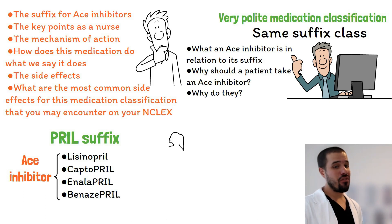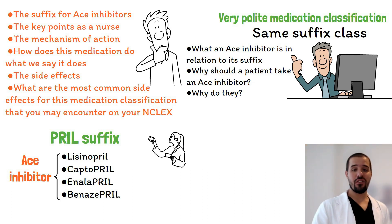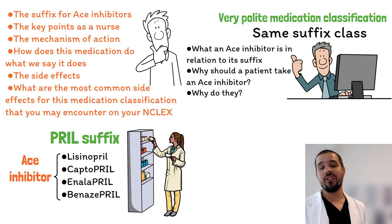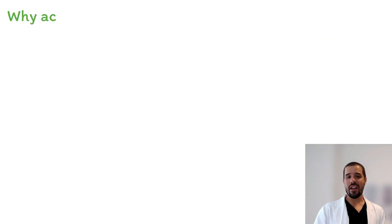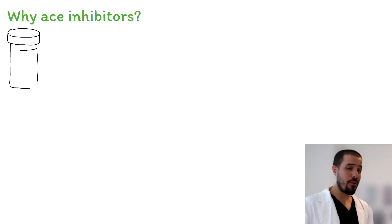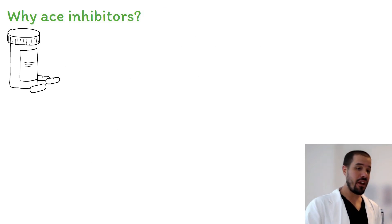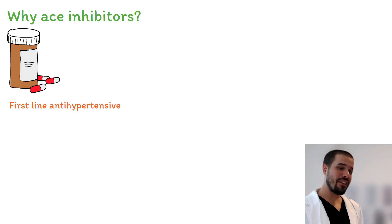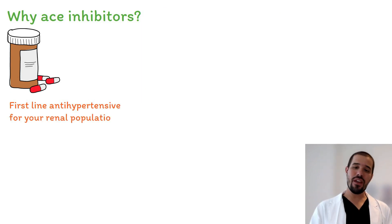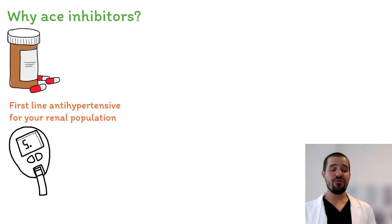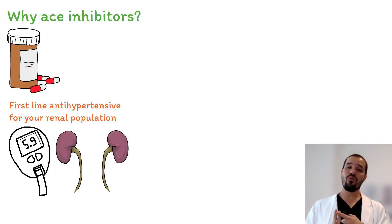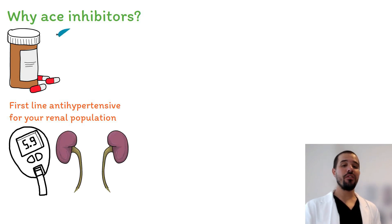As a nurse you need to be able to make this specific distinction to identify if your patient is receiving the correct medications. ACE inhibitors are an antihypertensive medication — specifically a first-line antihypertensive for your renal population. Individuals suffering from diabetes and renal issues are more than likely going to be on an ACE inhibitor if they suffer from hypertension.